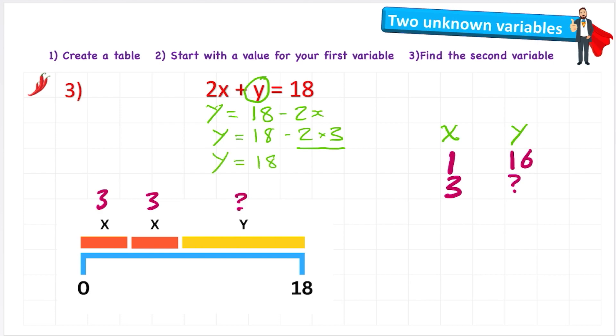So y = 18 - 2 × 3 is 6, so minus 6. y = 12. Let's check it by replacing the question mark with a 12 and then adding them together. 3 + 3 is 6, plus 12 equals 18. Got it right again.